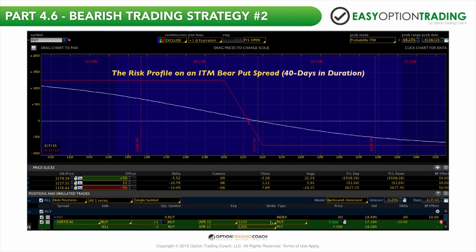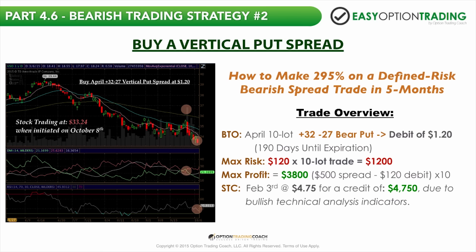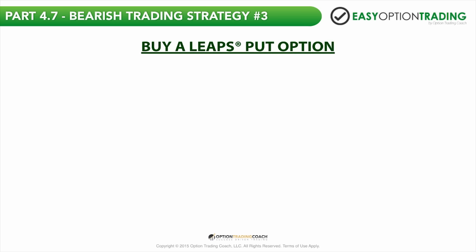It's about freeing up capital and taking off a nice profit when it's ready — when you have the signal. Sell to close February 3rd at $4.70 per contract times a 10-lot trade, which is a credit of $4,750, due to those bullish technical analysis indicators.